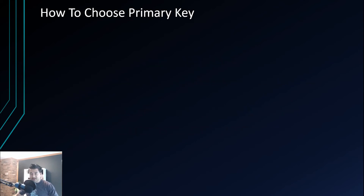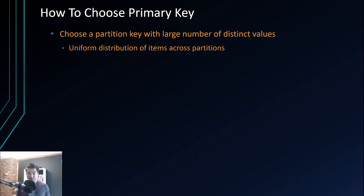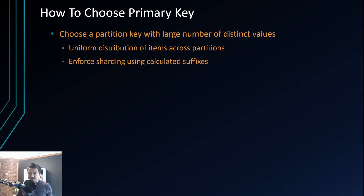Now, how should you choose the primary key? Choose a partition key with a large number of distinct values. This uniformly distributes your table's items across all partitions so traffic splits across all partitions rather than concentrating on one. To enforce this, you can also use calculated suffixes.